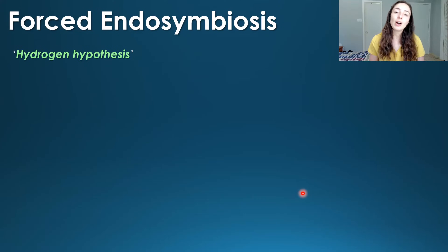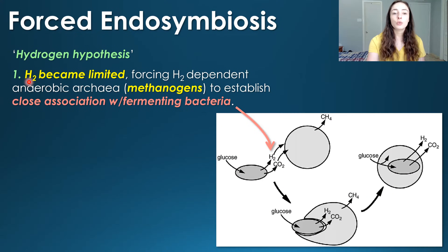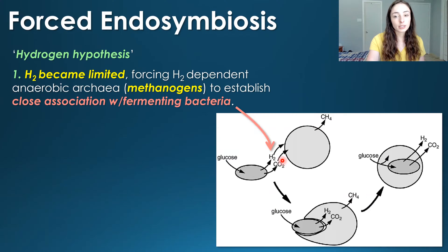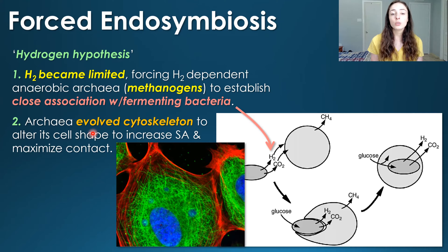Let's walk step-by-step through how this might have happened using the hydrogen hypothesis, which hypothesizes exactly how endosymbiosis would have occurred. Step one: hydrogen became limited for anaerobic bacteria that needed it, such as methanogens. Methanogens use hydrogen as an electron donor to chemically reduce carbon dioxide, making methane — that's why they're methanogens. In a hydrogen-limited environment, they became closely associated with fermenting bacteria. The archaea eventually evolved a cytoskeleton to alter their cell shape, increasing surface area to maximize contact with the bacteria supplying their electron donor, hydrogen.